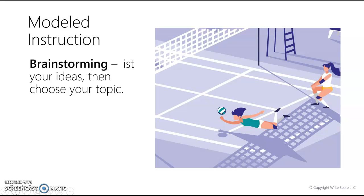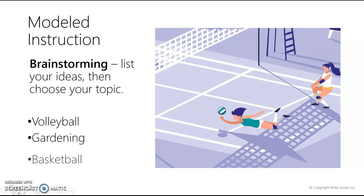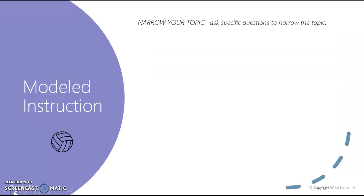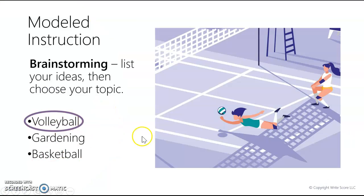Modeled instruction. Brainstorming lists your ideas, then you choose your topic. Brainstorming is a list of your ideas on a certain topic — y'all know we are used to brainstorming. Topics like volleyball, gardening, basketball. So, we chose volleyball here.